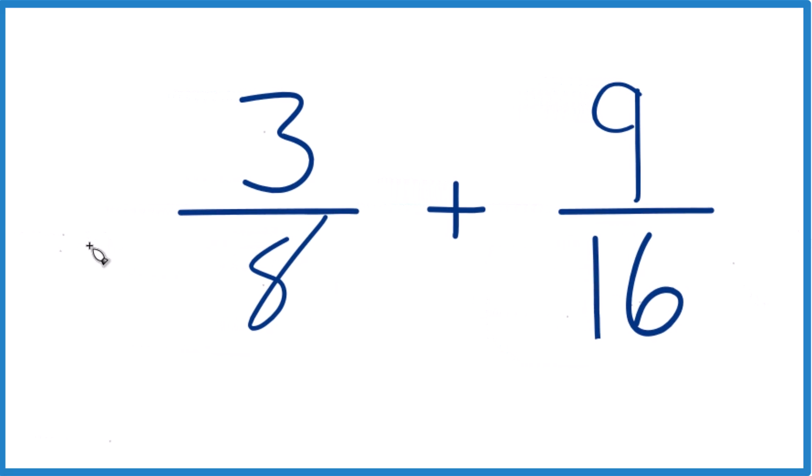Why don't we do this? If we said 2 times 8, that would be 16, so we already have 16 here.